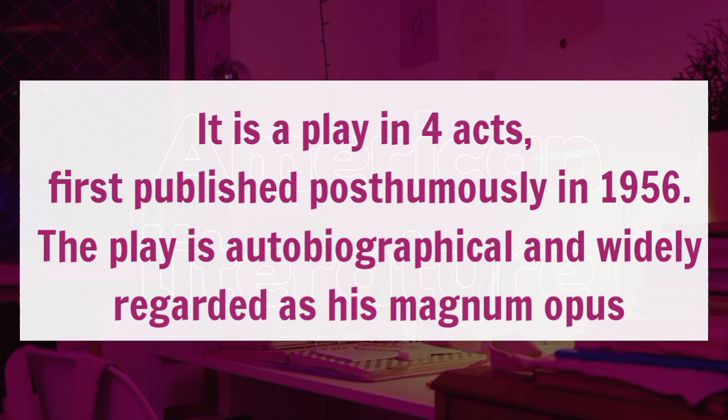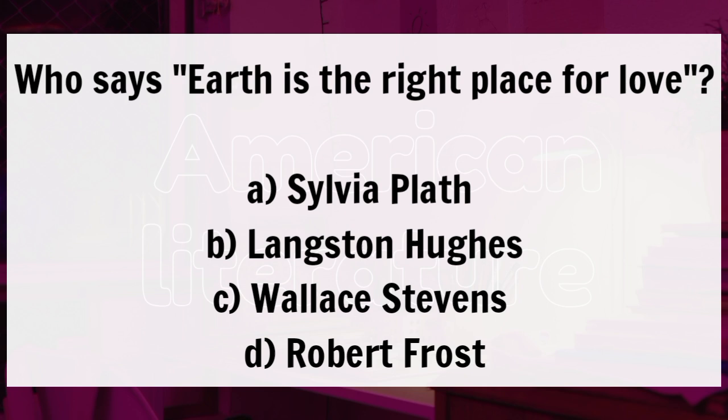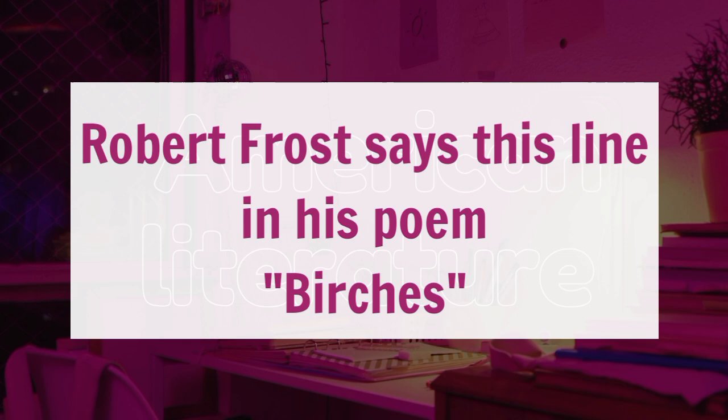Question 17: who says 'Earth is the right place for love'? A, Sylvia Plath. B, Langston Hughes. C, Wallace Stevens. D, Robert Frost. The correct answer is Option D. Robert Frost says this line in his poem Birches.